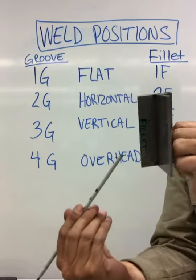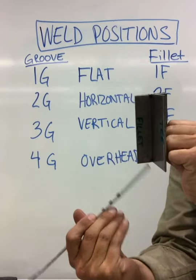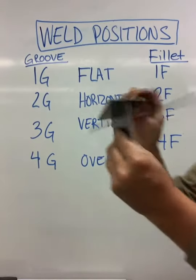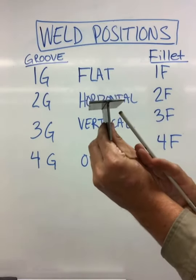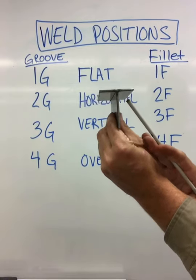Vertical is going to be up or down. There is a purpose to use up and down. Typically, thicker metals go up and thinner metals go down. And our overhead, 4F, is going to be